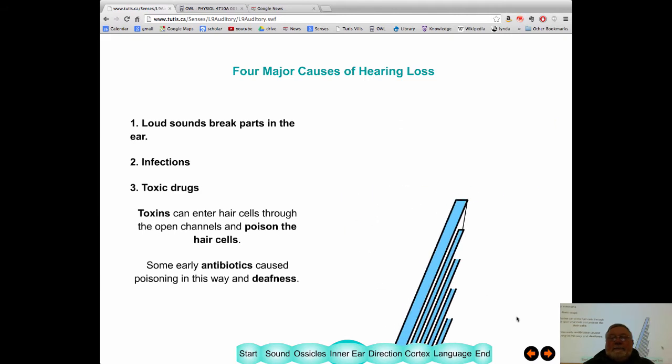The other thing that can happen is these flaps, when they open, they're not very selective. So, potassium can flow in. But, also, all kinds of other substances can flow in. And, one of the substances is antibiotics. Some of the antibiotics that were prescribed for infections would enter these cells and actually kill the hair cells. And, you could get deafness from a dose of antibiotics.